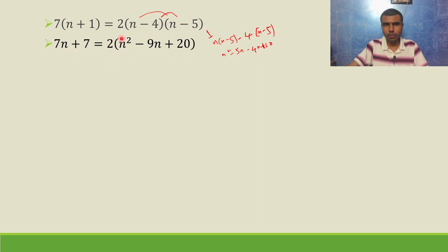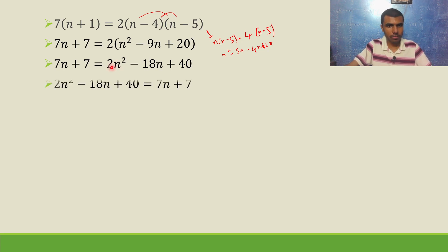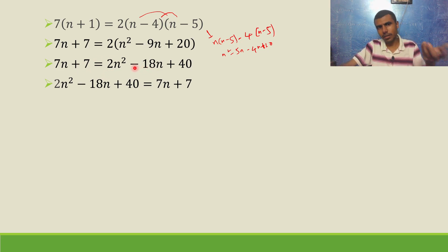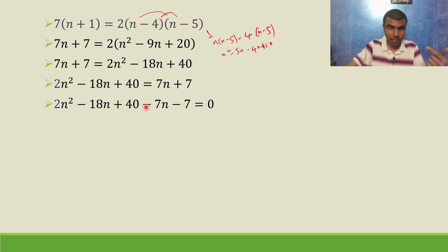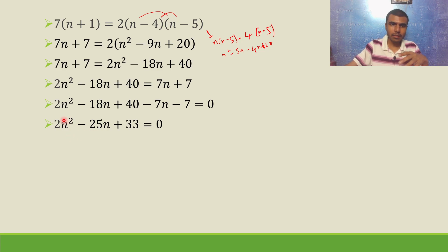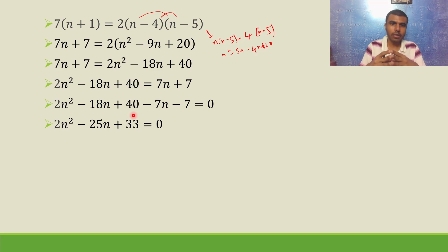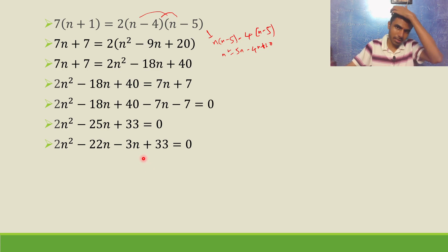Now get everything to one side. Reversing LHS and RHS: 2n squared minus 18n plus 40 minus 7n minus 7 equals 0. So minus 18n minus 7n is minus 25n, and 40 minus 7 is 33. To factorize 2n squared minus 25n plus 33: 2 into 33 is 66, and 66 equals 22 into 3. So minus 25n can be written as minus 22n minus 3n.